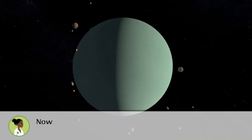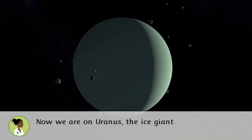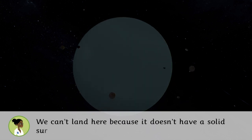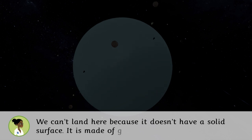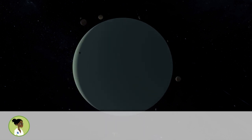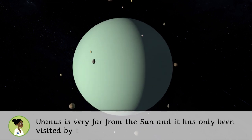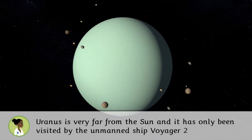Now we're on Uranus, the ice giant. We can't land here because it doesn't have a solid surface. It is made of gases and liquids. Uranus is very far from the sun and it has only been visited by the unmanned ship Voyager 2.